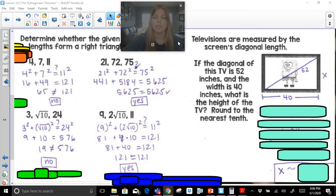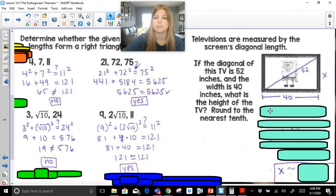This last problem. When you want to go buy a TV, TVs are always measured by the diagonal, not the horizontal. So it says here, if the diagonal of this TV is 52 inches, and the width is 40 inches, what is the height of the TV? Round to the nearest tenth. Now so far in this lesson, I've only dealt with radicals, but when we're dealing with a word problem, we do want to actually use our decimal values.